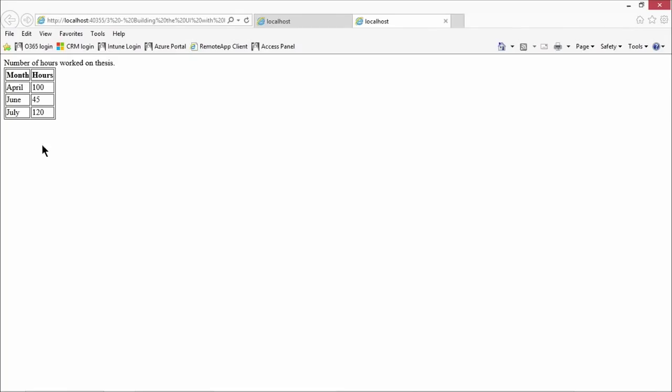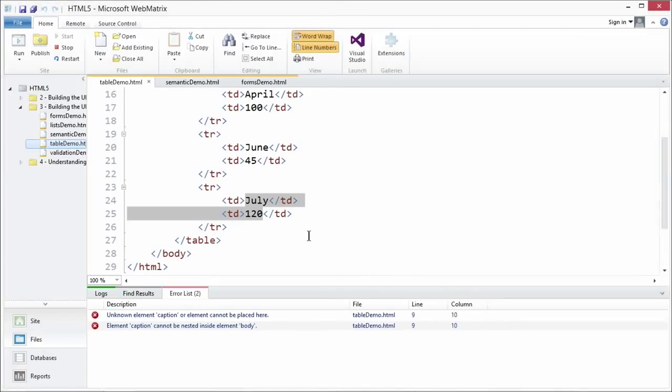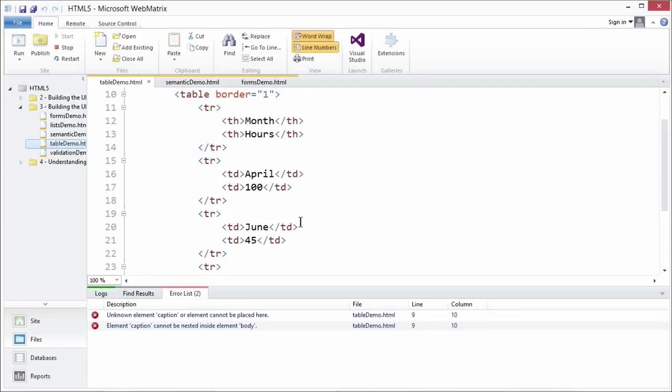Anyway, let's go ahead and pop that demo into our browser and you see how that table is formatted there. Pretty cool stuff. We've got our caption up top. Number of hours worked on thesis. Let me snap that over here. And then we have the month and the hours. Pretty self-explanatory, but tables can be confusing to work with. So if it does take you a little bit longer to figure out, don't be too hard on yourself. It's definitely harder to read than some of the other markup that we use.